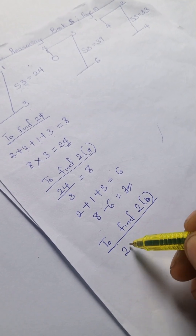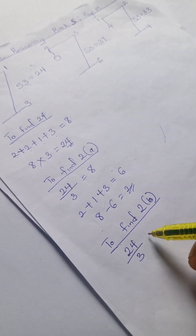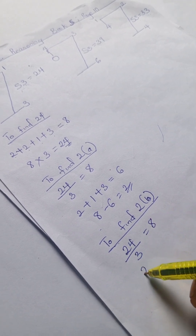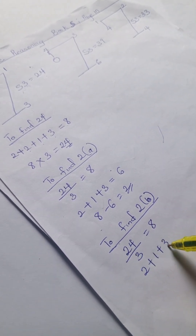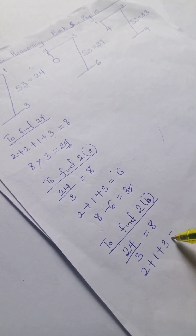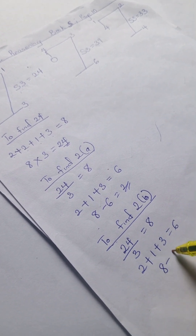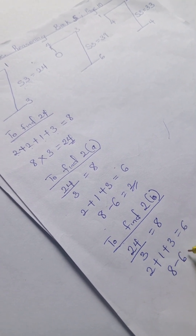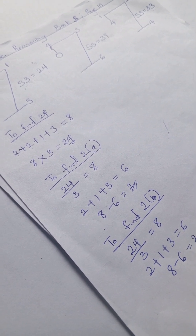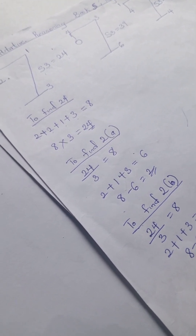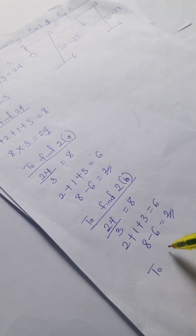You can apply the same method to find the second two. We have 24 divided by 3, that gives us 8. Then two plus one plus three gives us 6. So 8 minus 6, we have 2.